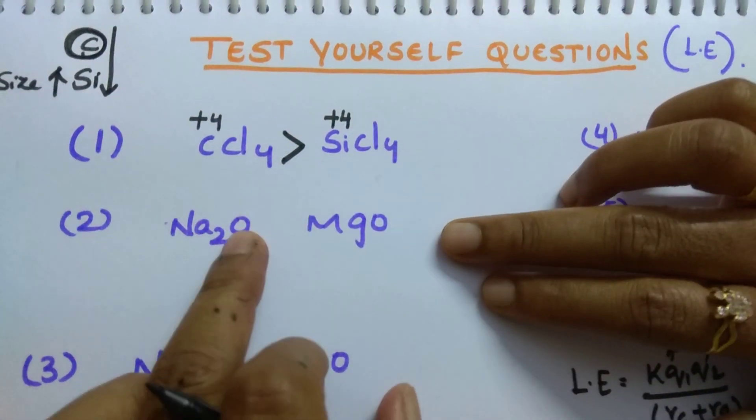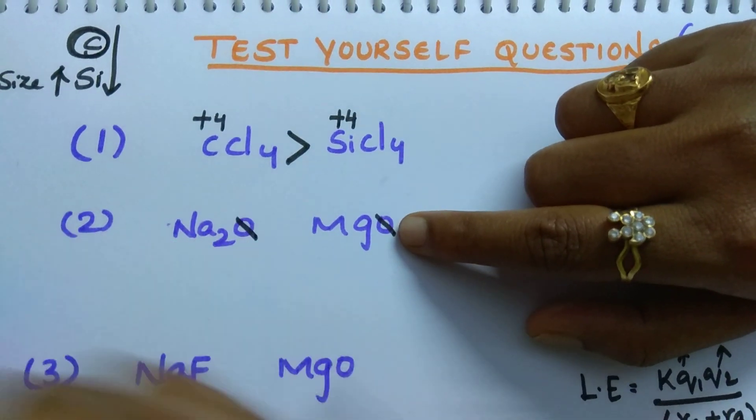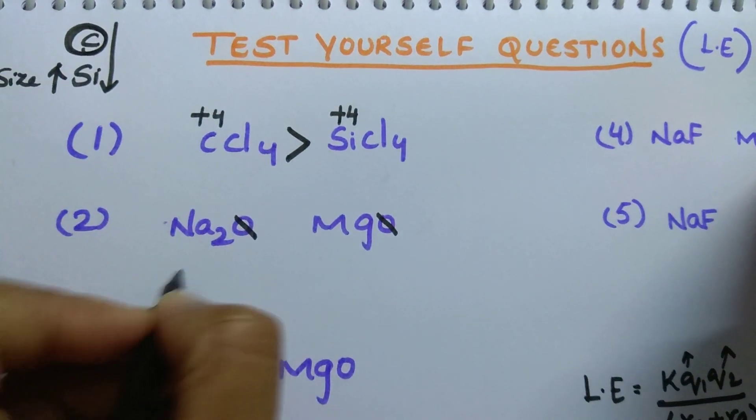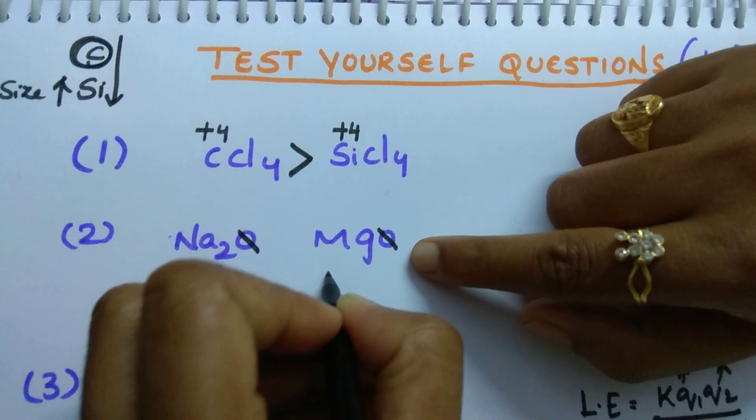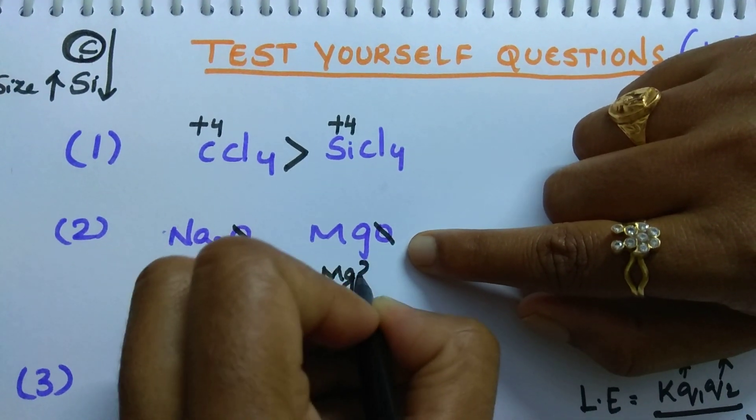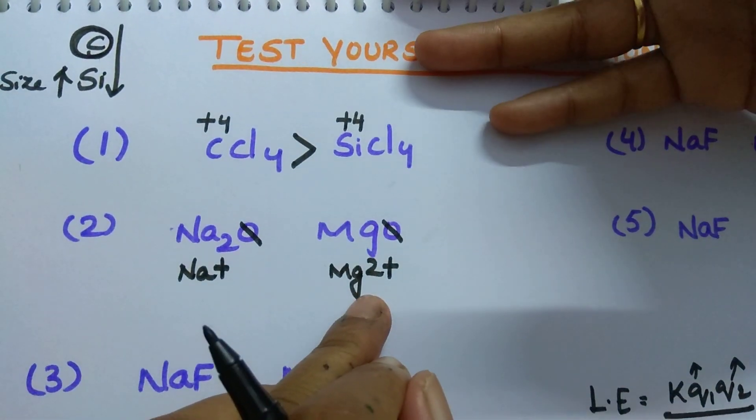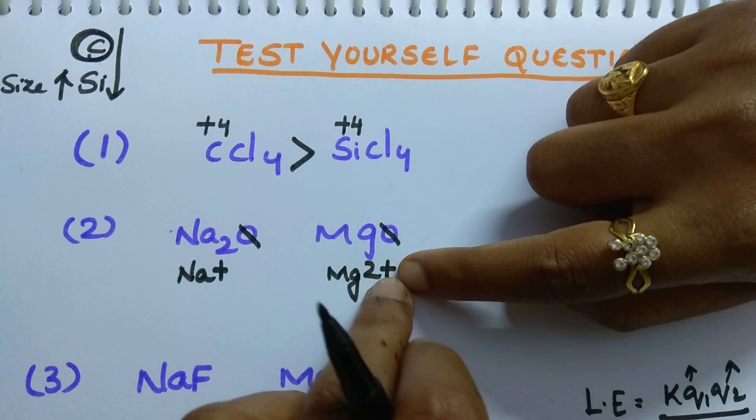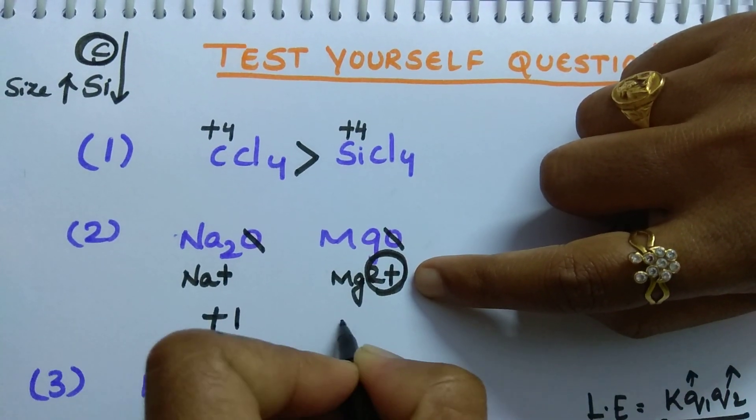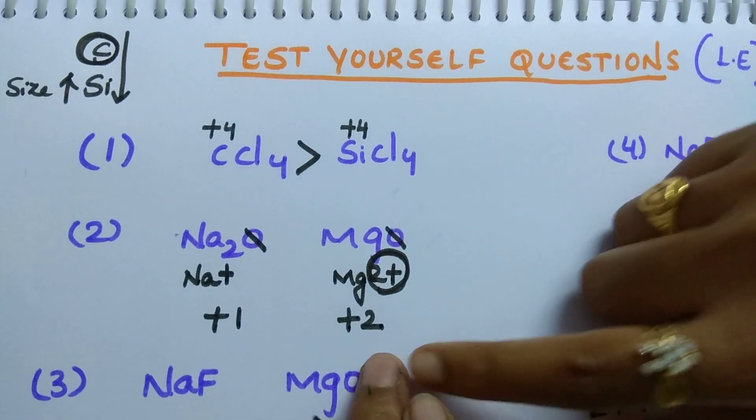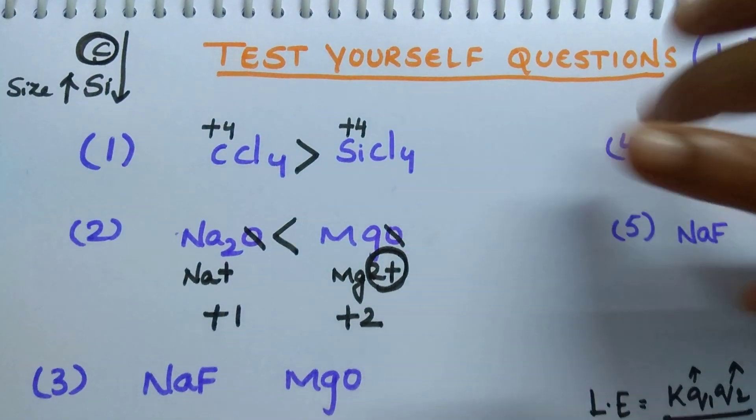Next question is Na2O, MgO. Here, oxygen is same. No need to worry about that. What is different? Sodium here, here magnesium. Sodium is in plus 1 state. Magnesium is in plus 2 state. Which is having more charge here? You can see based on the size also. Here, Mg2 plus, plus 2 is a charge. Here, plus 1 is a charge. So this is having more charge. So MgO is having more lattice energy.